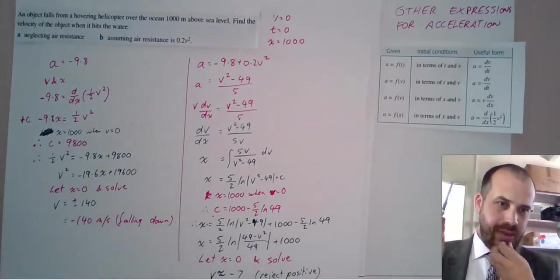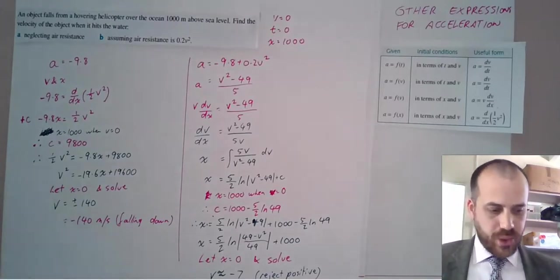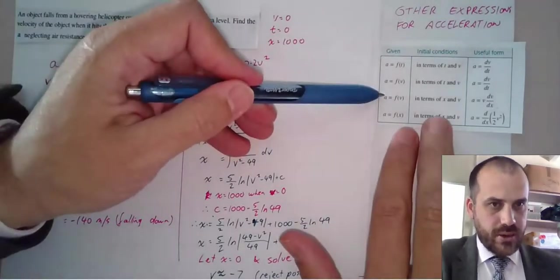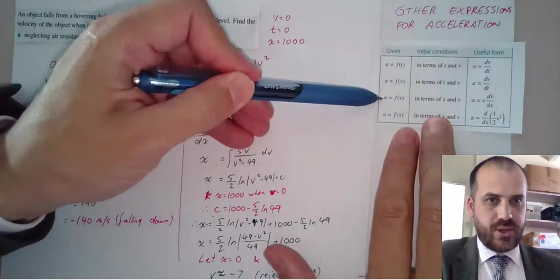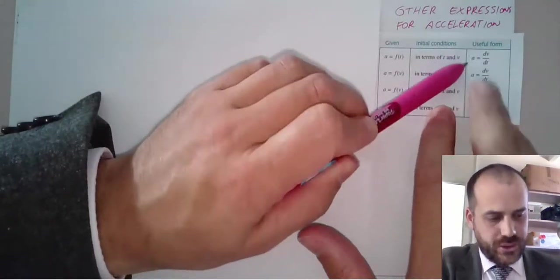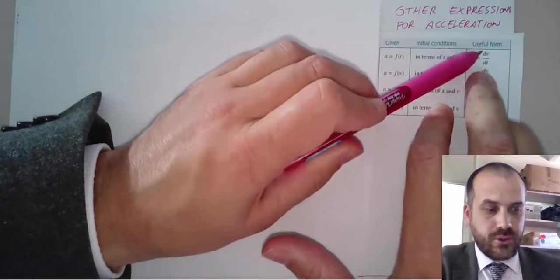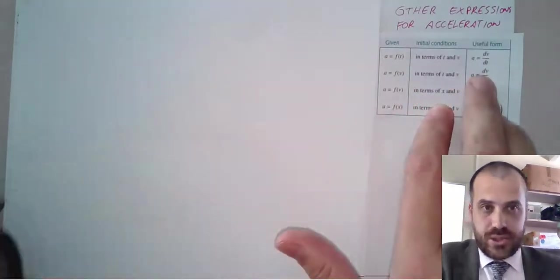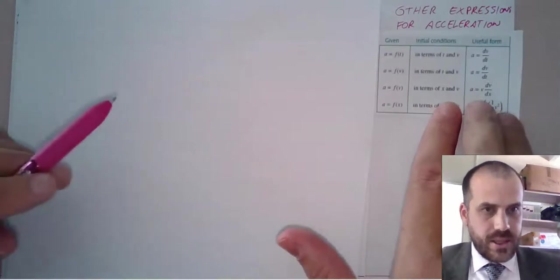All right, that's the end of those questions. The very last thing I should probably tell you is why on earth these two things are true. So, the first two are the same and they're not controversial. The acceleration is equal to the derivative of the velocity with respect to time. You knew that.